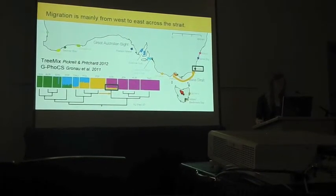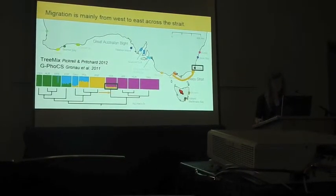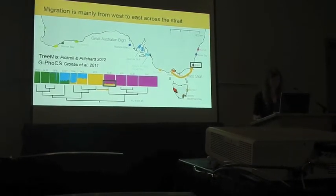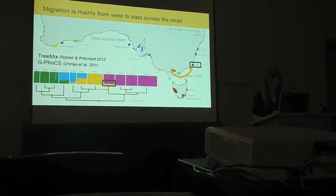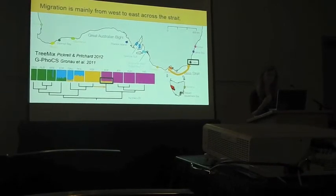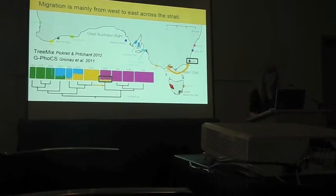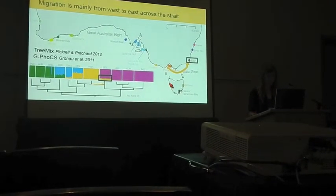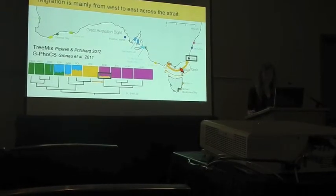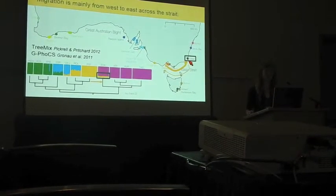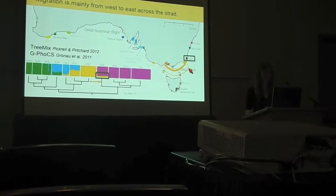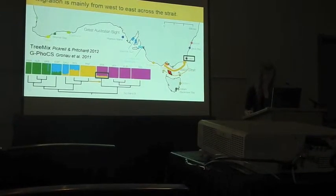I also used the coalescent sampler G-Phocs to look at migration patterns in both directions, and we could infer that migration going west to east is about three times as strong as migration going from the east towards the west.